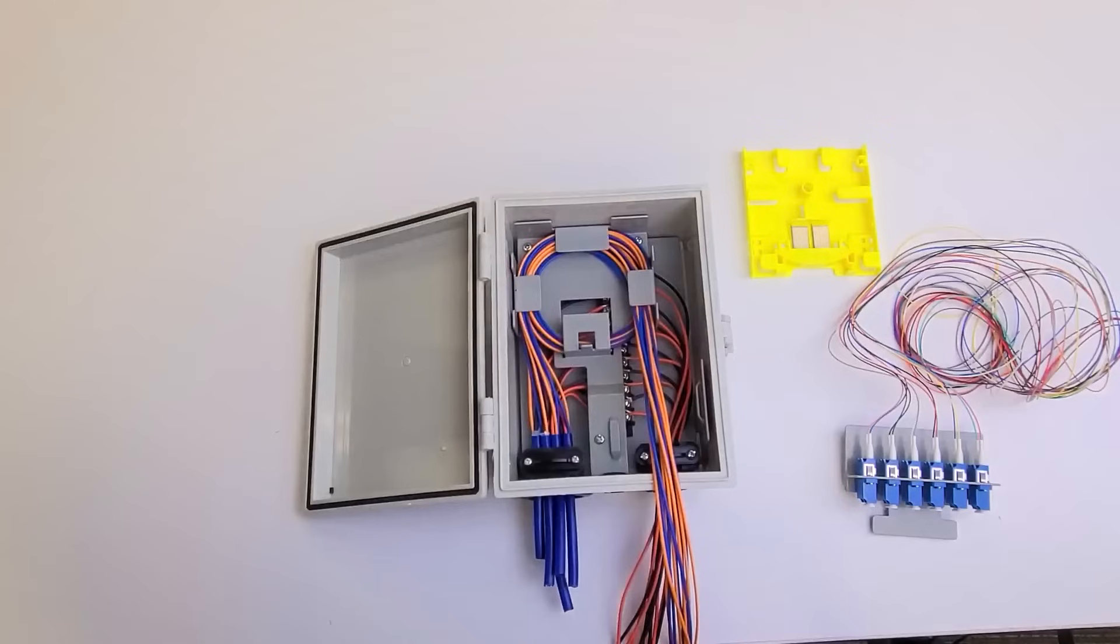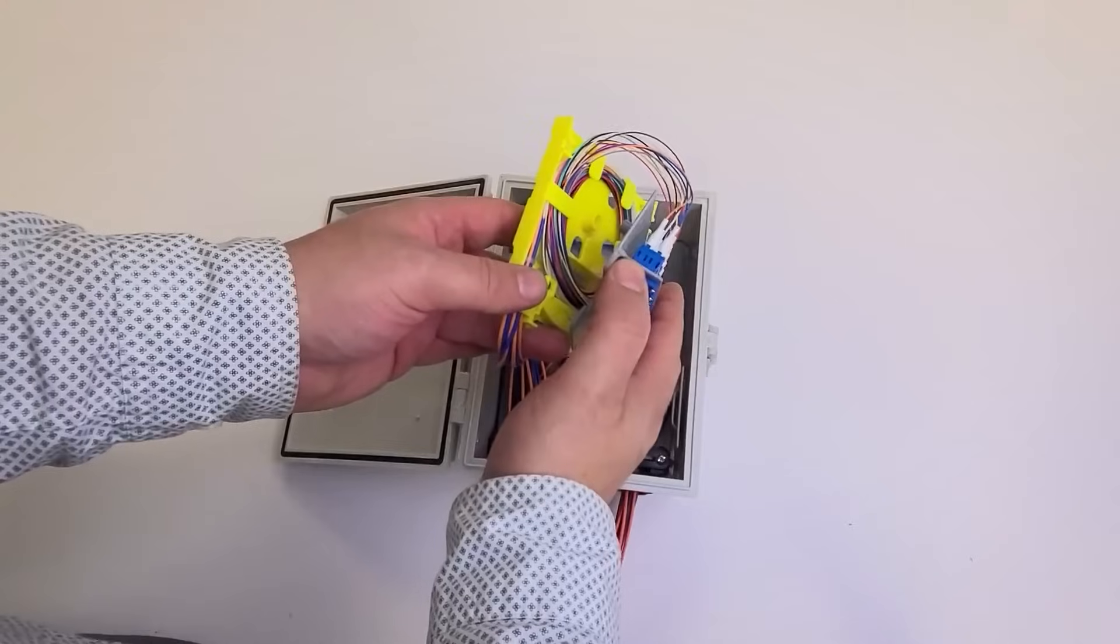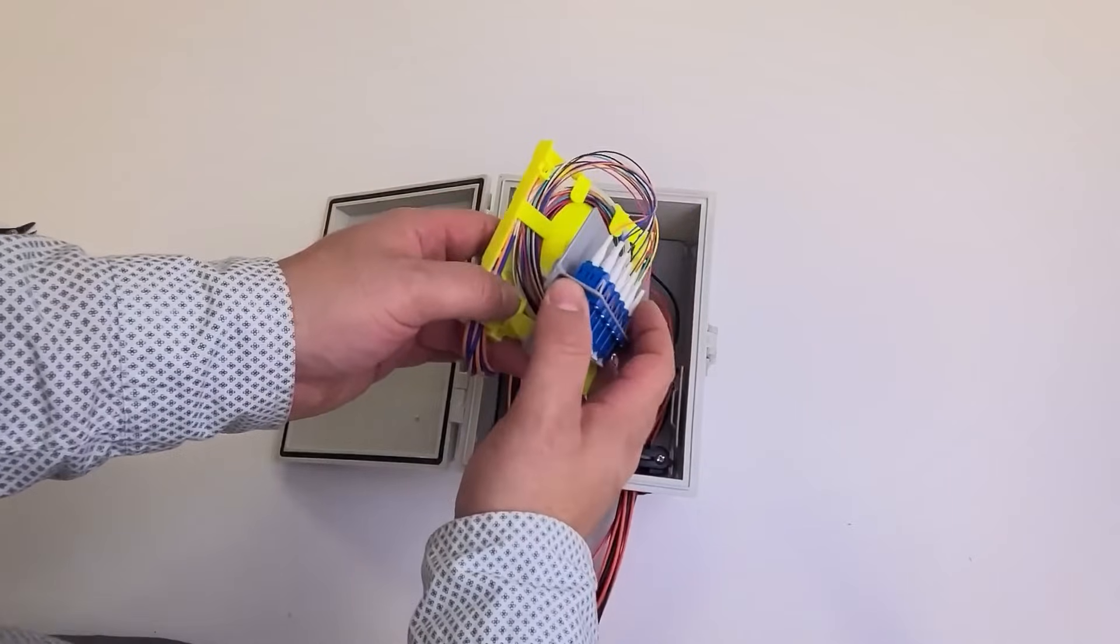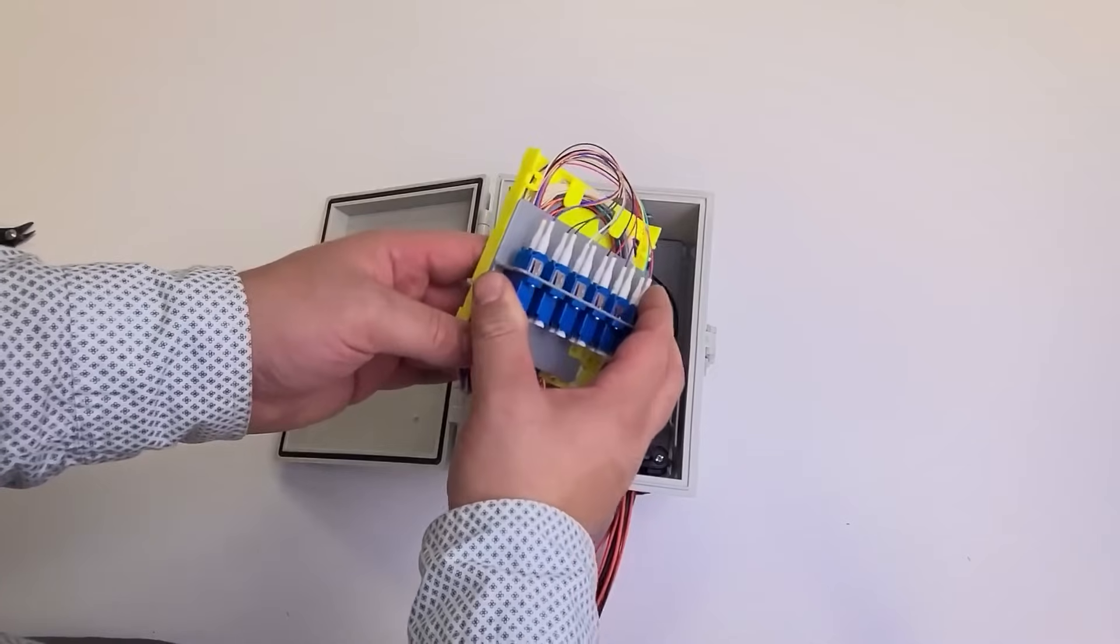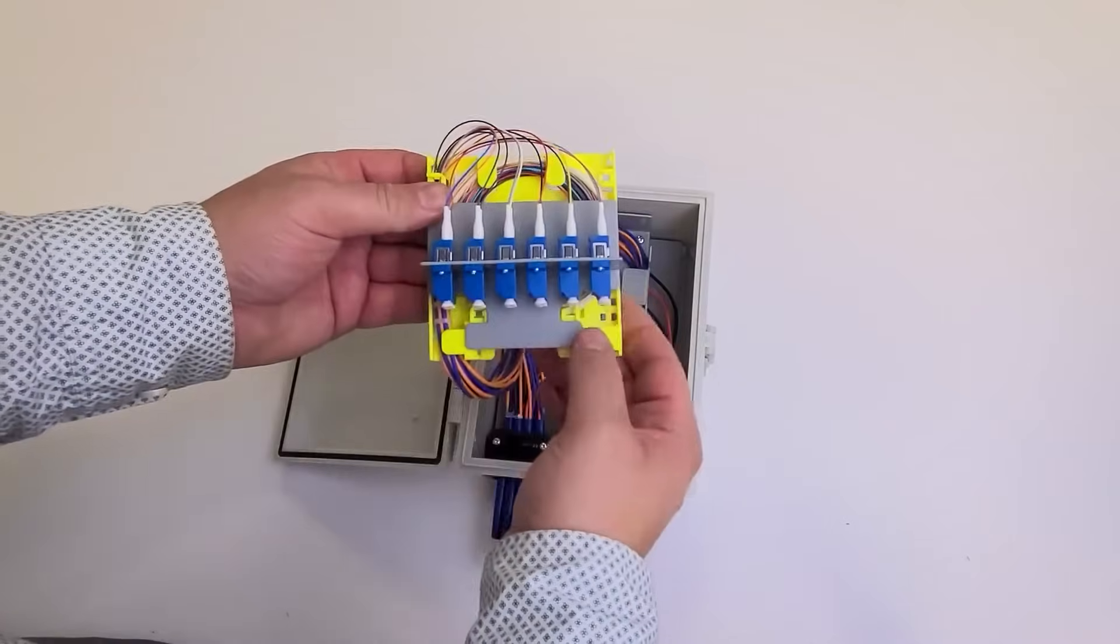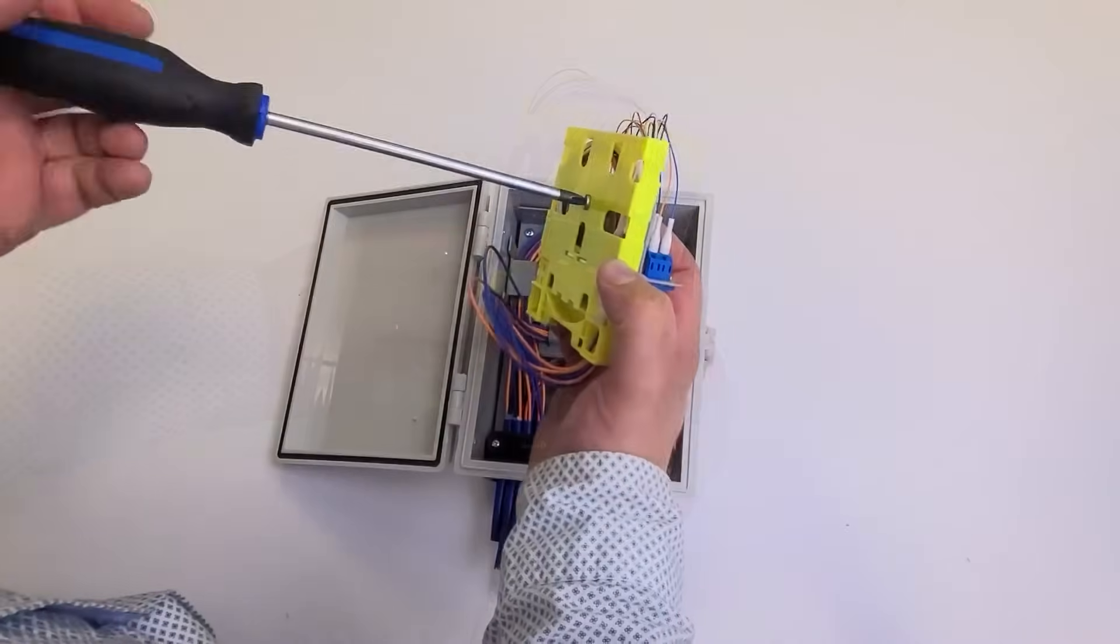Once you've performed and secured your fusion splice into the mini splice tray, attach the adapter strip bracket back onto the mini splice tray by aligning the middle pin and applying some pressure. Next, secure it in place with a screw.